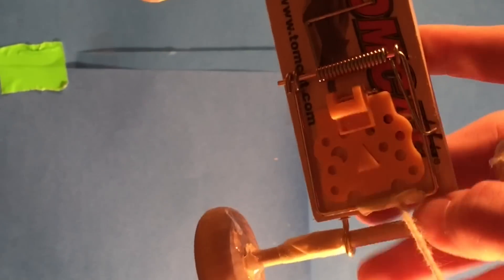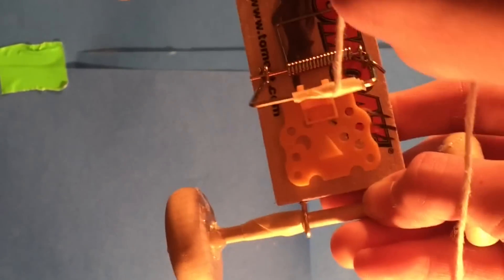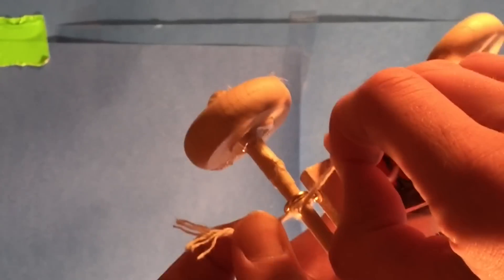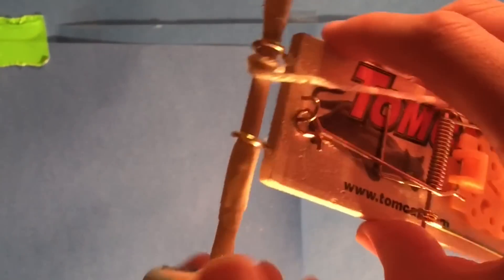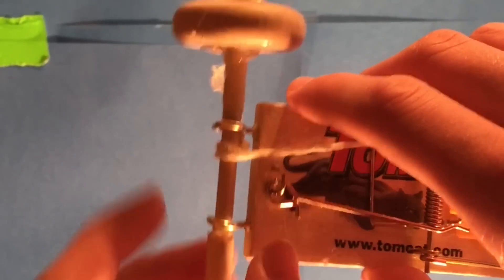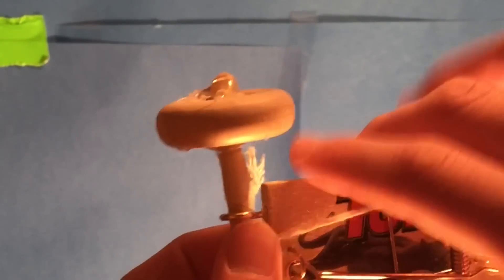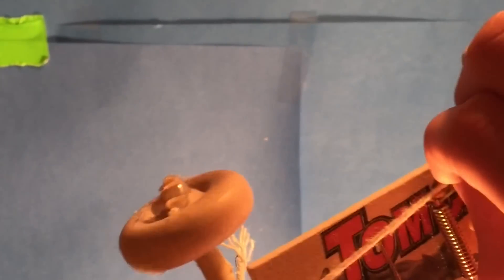I attached the string to the mousetrap with some tape, then tied the other end of the string to the axle on the other end of the mousetrap. You will roll it up when you're ready to launch, and this will cause the mousetrap to accelerate forward.